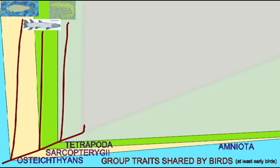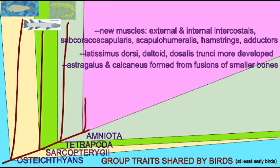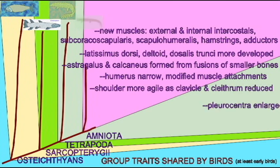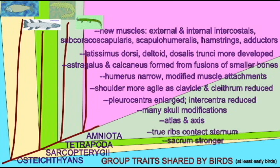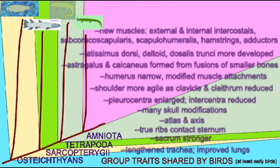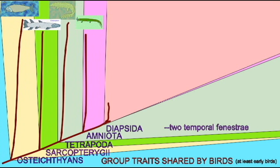The fossil record indicates that this nested hierarchy reflects the history of life, the unfolding of the great family tree, and that this explains the nested hierarchy pattern.